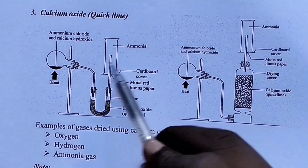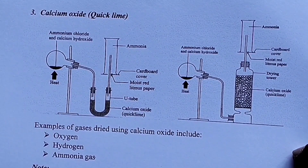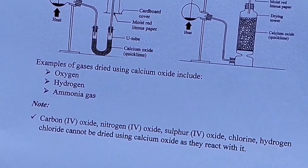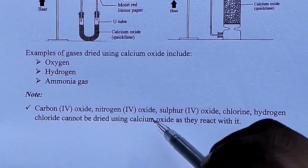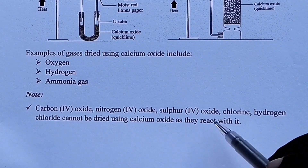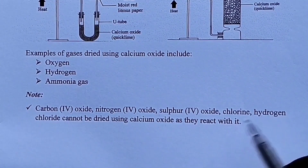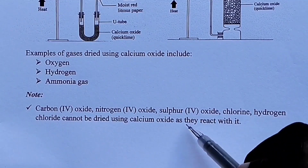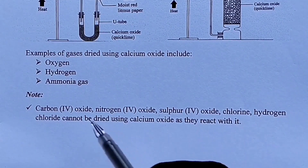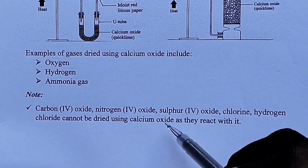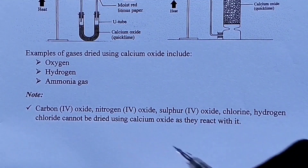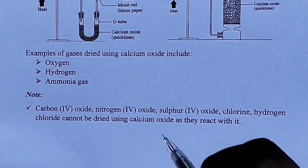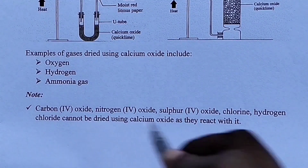Note: carbon dioxide gas, nitrogen dioxide gas, sulfur dioxide gas, chlorine gas, and hydrogen chloride gas cannot be dried using calcium oxide because they react with it. Remember, all these gases are acidic gases, and calcium oxide being basic reacts with acidic gases to form a salt. For that reason, we cannot use calcium oxide to dry these gases.